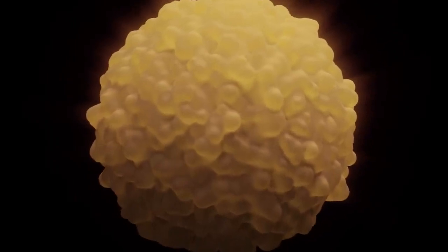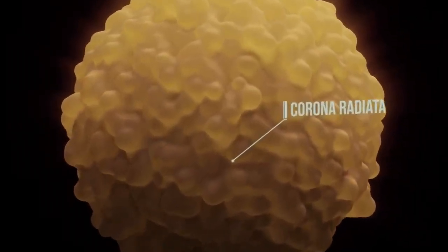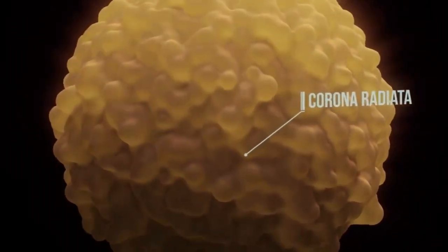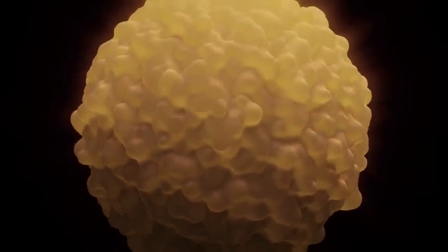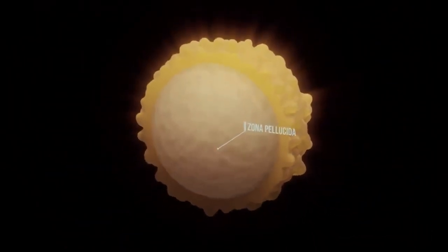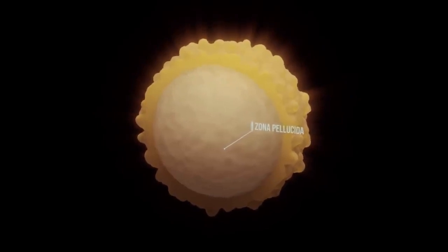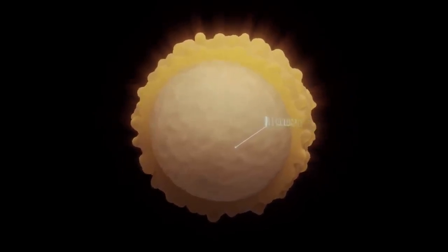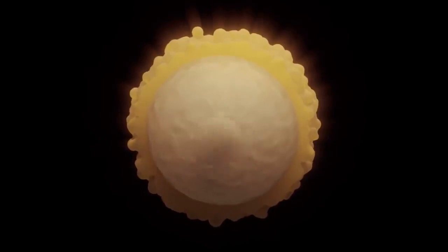The egg consists of an outer layer called the corona radiata. Underneath is another protective layer, the zona pellucida. Both layers must be penetrated by the sperm cell in order to reach the cell nucleus that contains 23 different chromosomes.